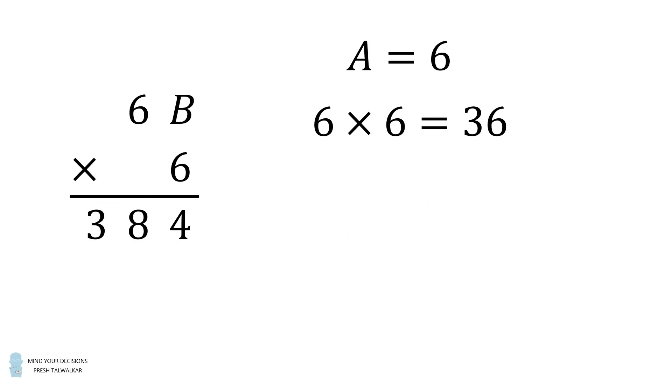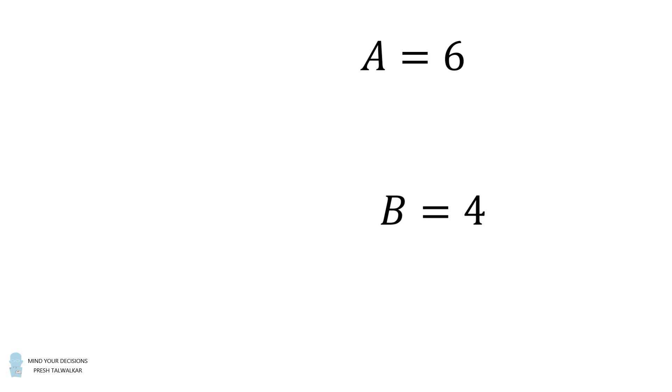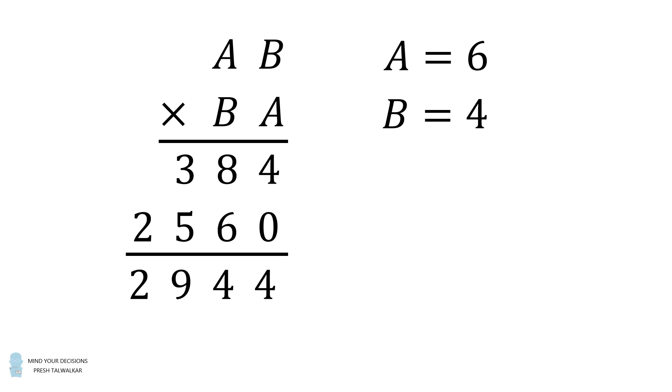We substitute that in and then we consider we have a carryover that's equal to 2. Because 6 multiplied by 6 is equal to 36 and the result is 38. So we know that B multiplied by 6 is equal to 4 with the carryover of 2. In other words, B multiplied by 6 is equal to 24. That means B is equal to 4. And we've solved the problem. We have A is equal to 6 and B is equal to 4. And that's the answer!